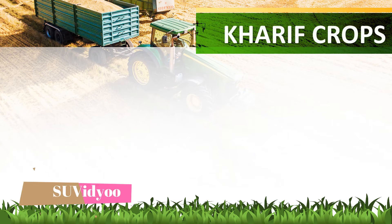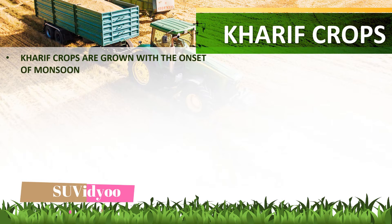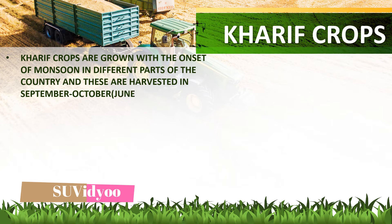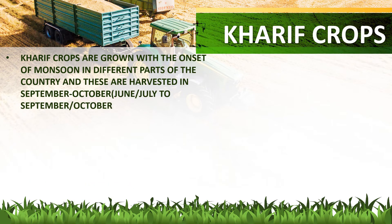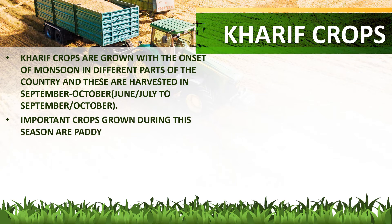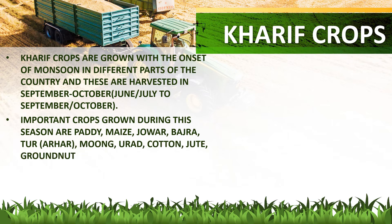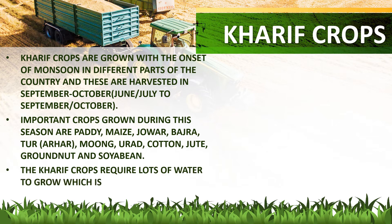Kharif crops are grown with the onset of monsoon in different parts of the country and are harvested in September-October, that is, sown in June-July and harvested in September-October. Important crops grown during this season are paddy, maize, jowar, bajra, tur (arhar), moong, urad, cotton, jute, groundnut and soya bean. Kharif crops require lots of water to grow, which is mostly fulfilled by the monsoon rainfall.